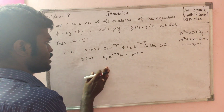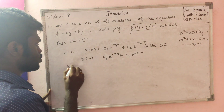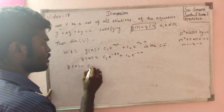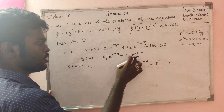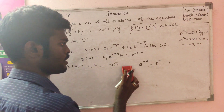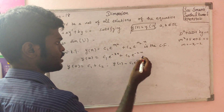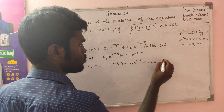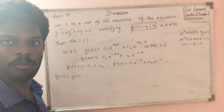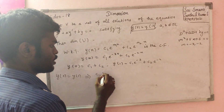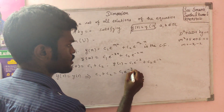Now y(x) is the complementary function. Given the condition y(0) = y(1), substituting x=0 gives C1·e^0 + C2·e^0 = 1, so C1 + C2 = 1. Then substituting x=1 gives C1·e^(−3) + C2·e^(−2). Given that y(0) = y(1), we have C1 + C2 = C1·e^(−3) + C2·e^(−2).